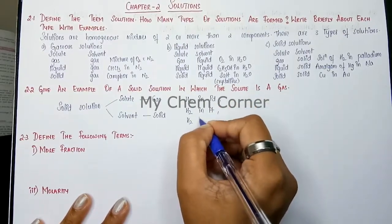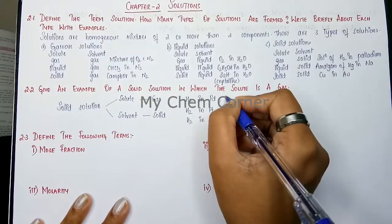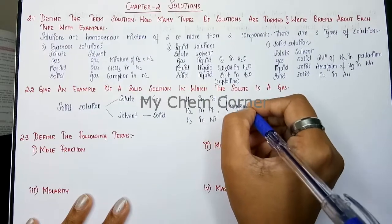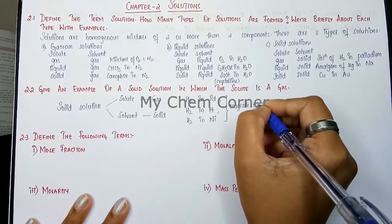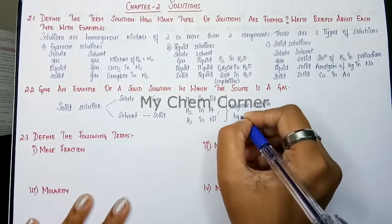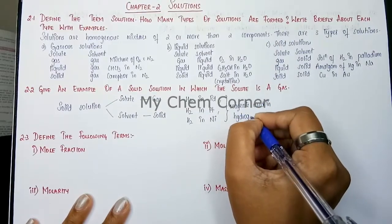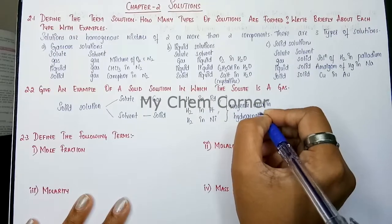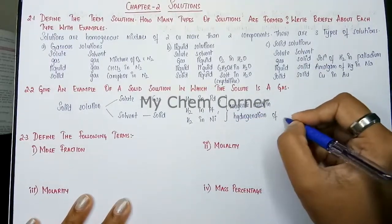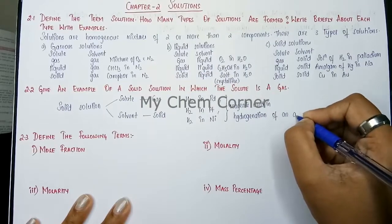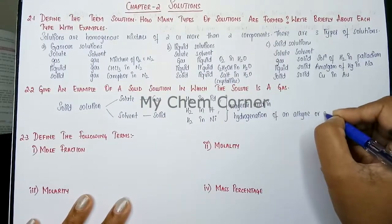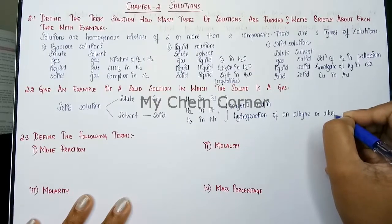hydrogen in nickel catalyst. These are all reagents used in hydrogenation of an alkene or alkyne, basically a reduction reaction.